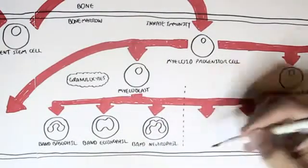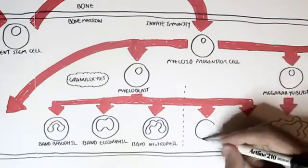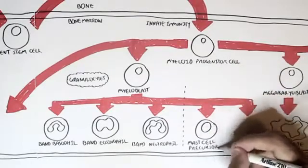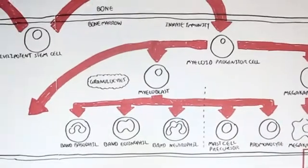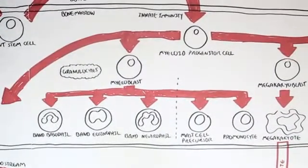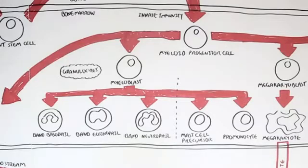Other cells that the myeloblast will produce that are not granulocytes are the mast cell precursor and the promonocyte. Whenever a cell has 'precursor' or 'pro' within its name, it means that it's not yet that particular cell. So the mast cell precursor means it's not a mast cell yet but it will become one, and the promonocyte means it's not a monocyte yet but it will become a monocyte.